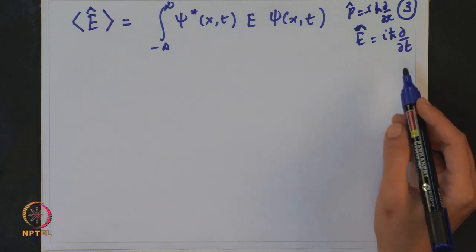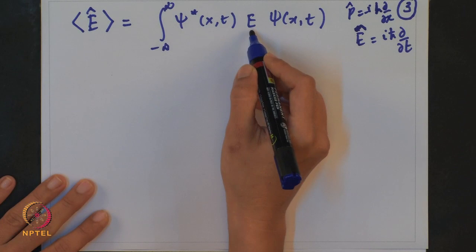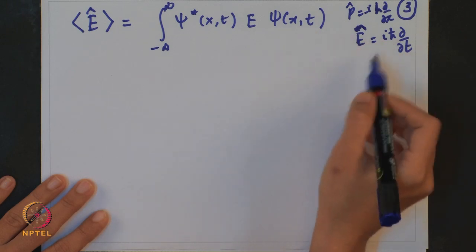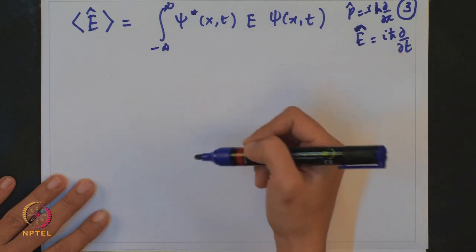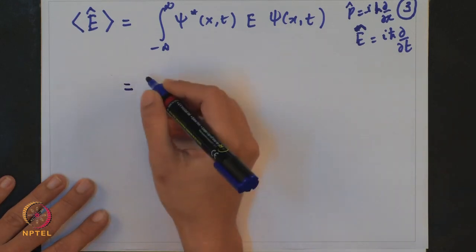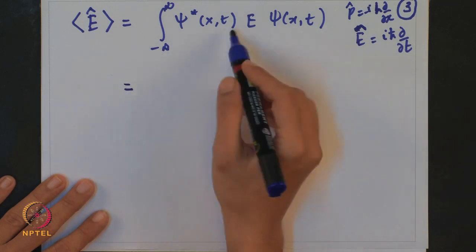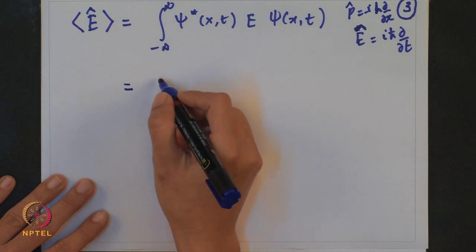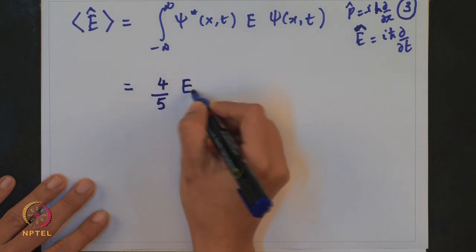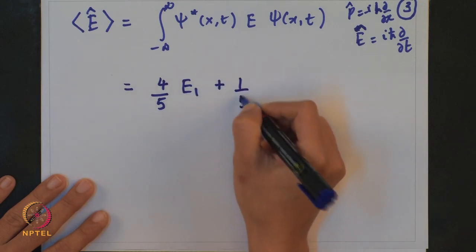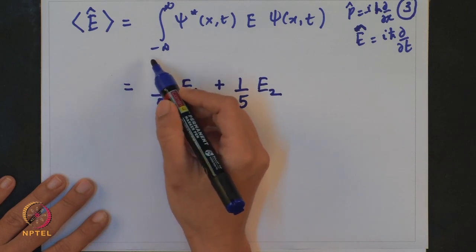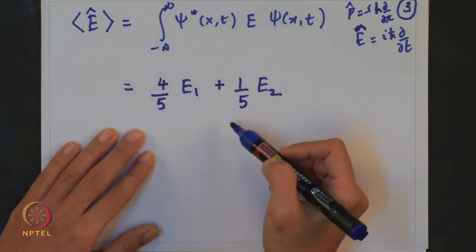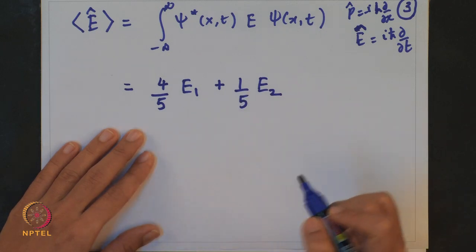When you differentiate ψ(x,t) with respect to t, the energy components E₁ and E₂ come out in the derivative. You write explicitly ψ* and ψ and operate with iℏ ∂/∂t. What you obtain in the end is (4/5) E₁ + (1/5) E₂. There are 2–3 steps involved and it is easy to work out — you just substitute ψ* and ψ with the operator and check whether you obtain this equation.